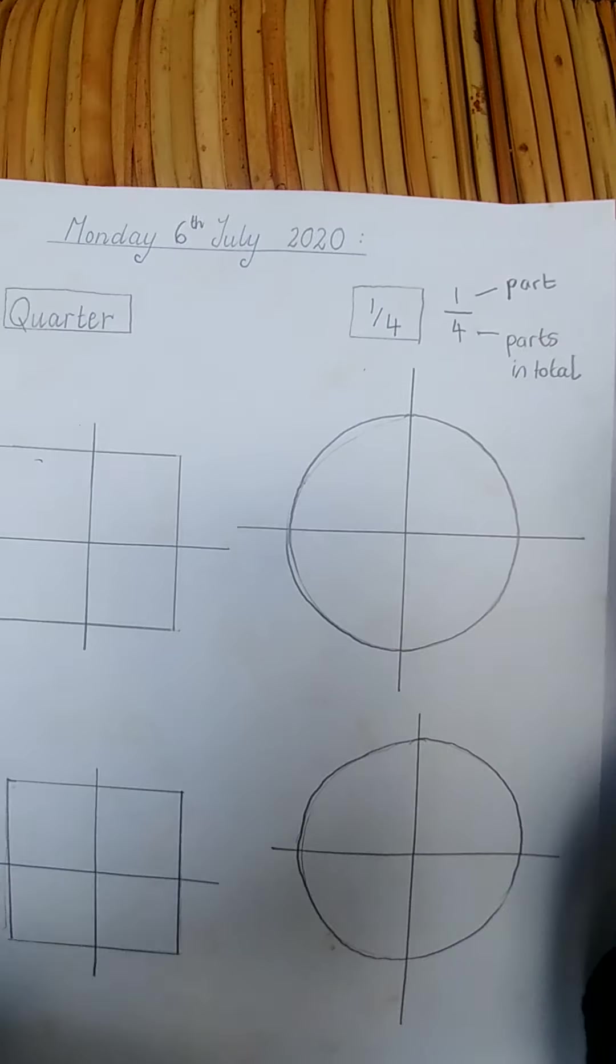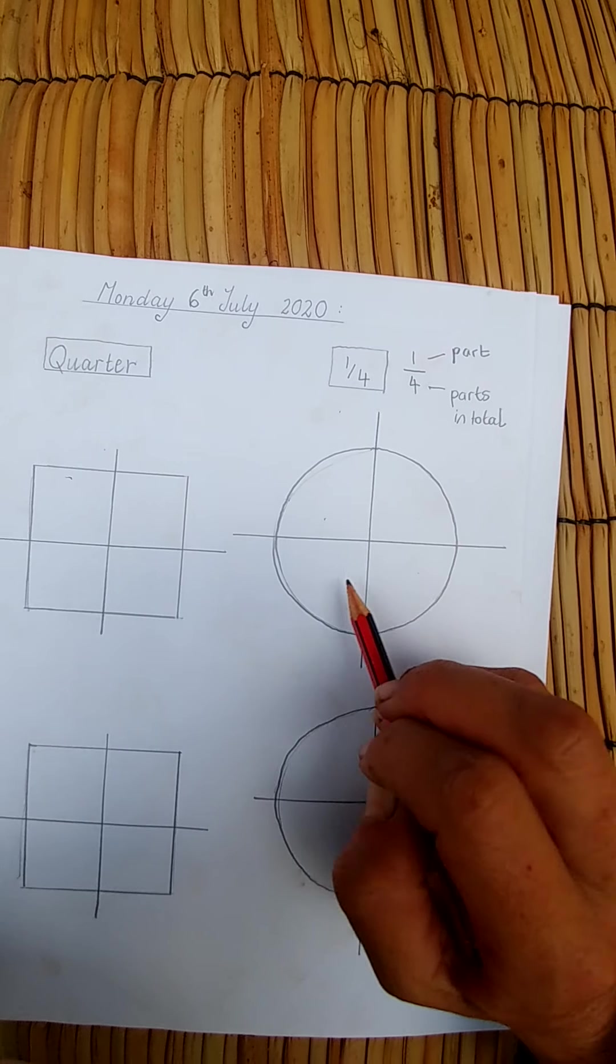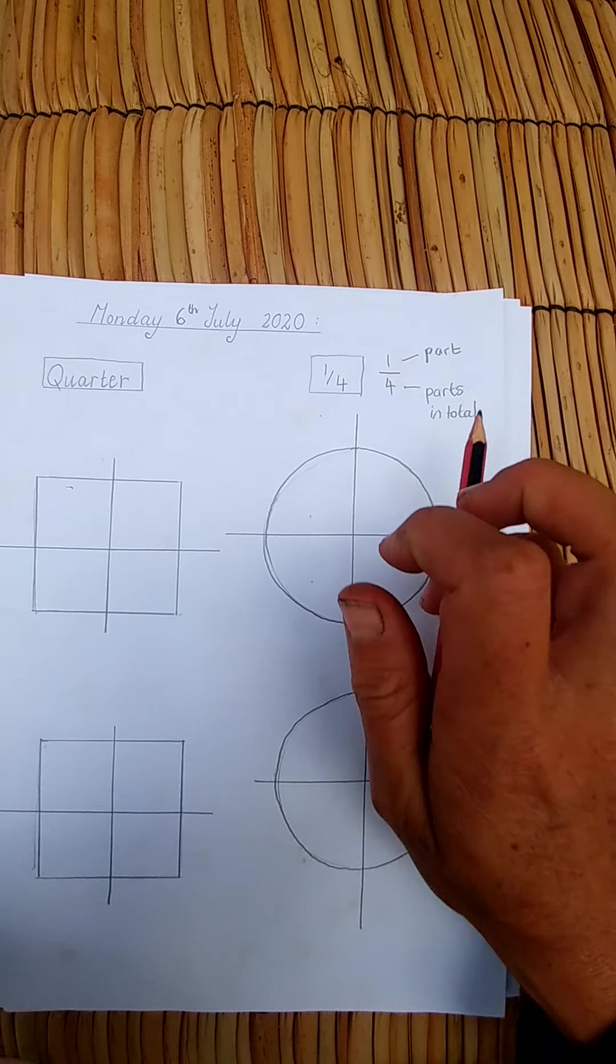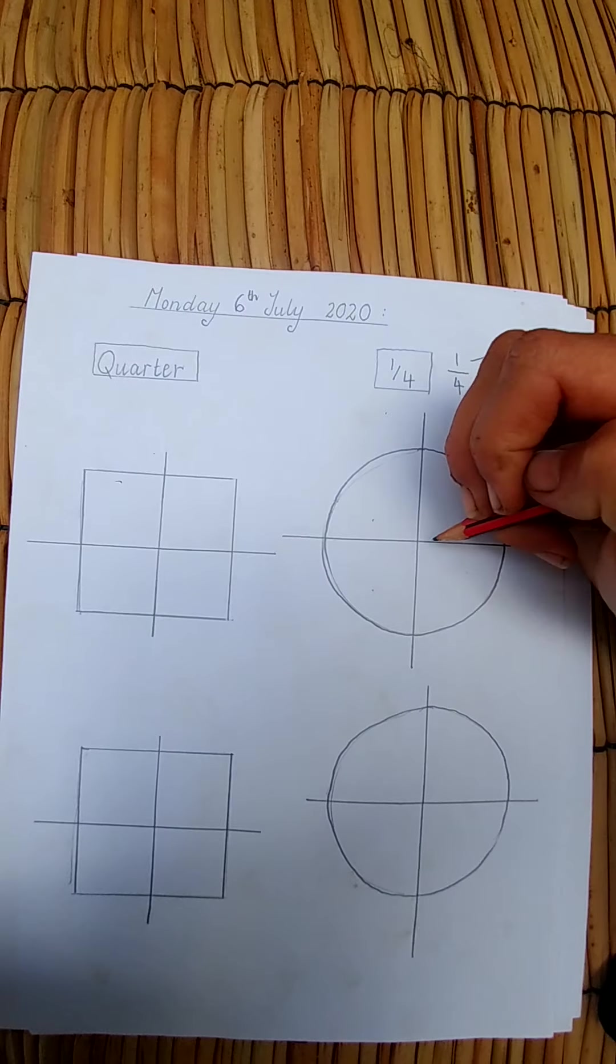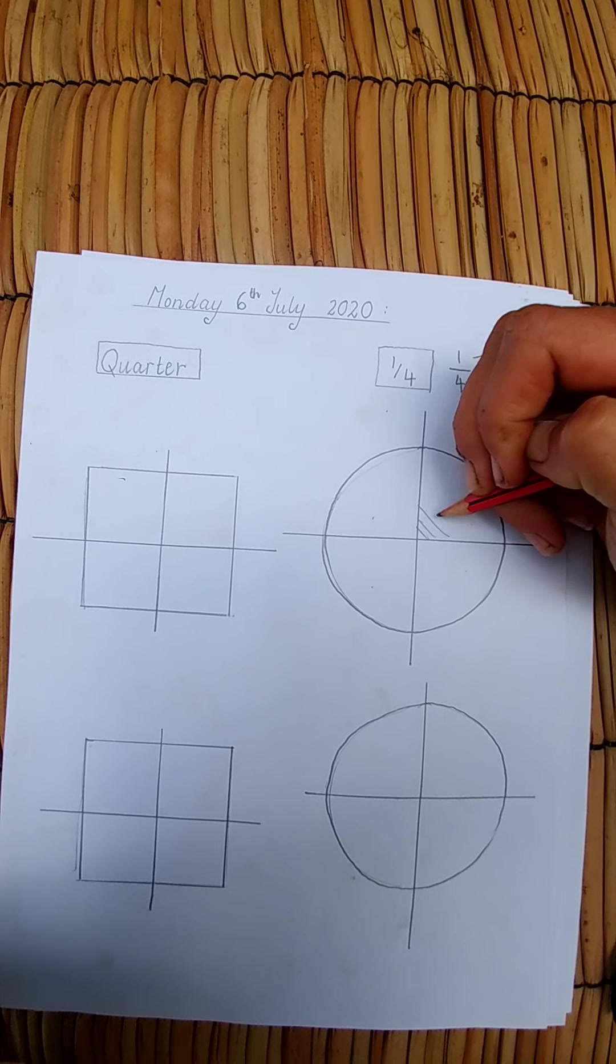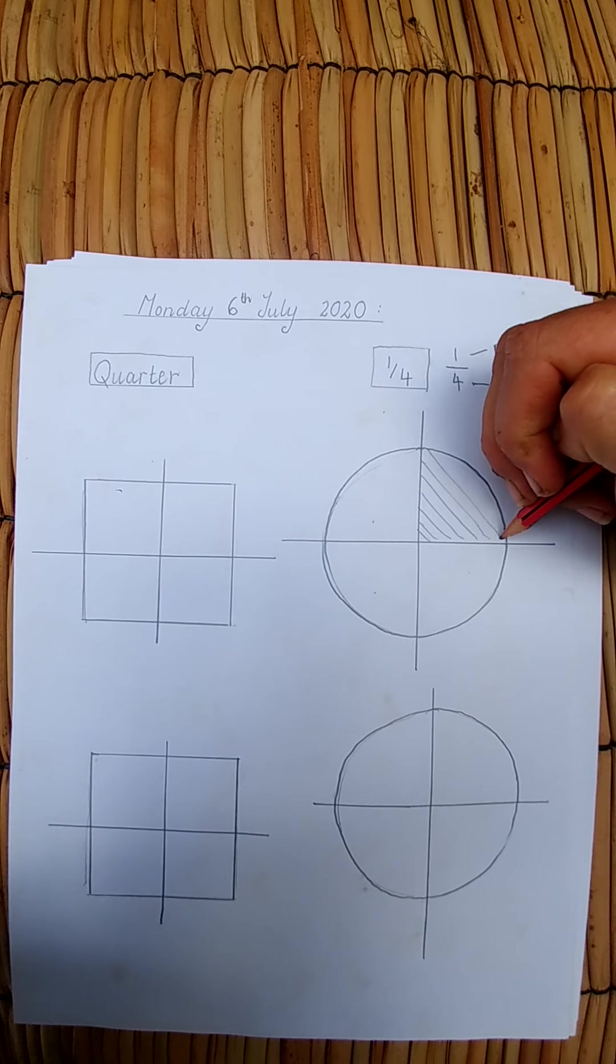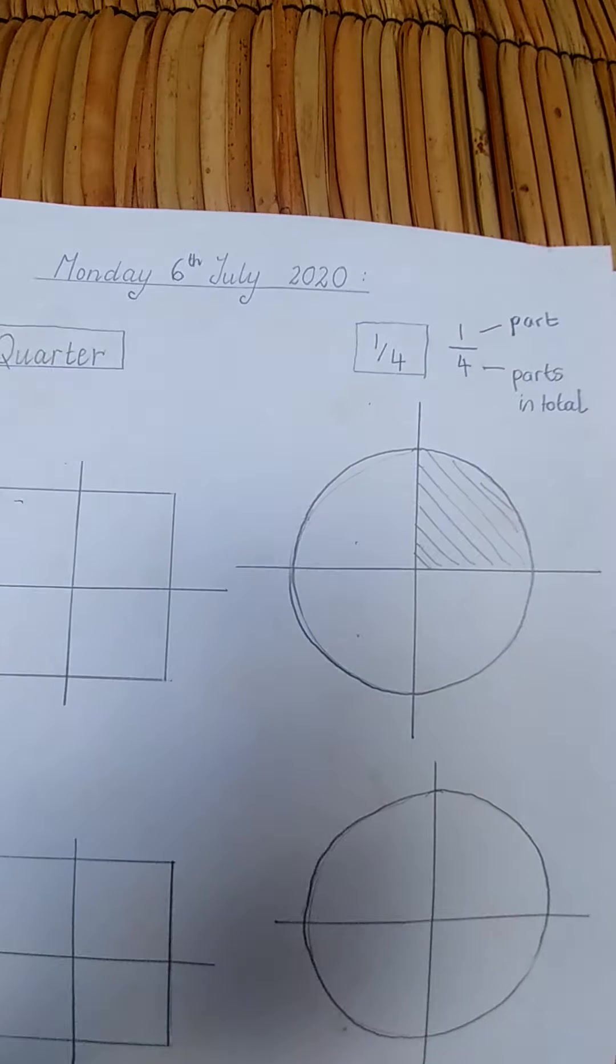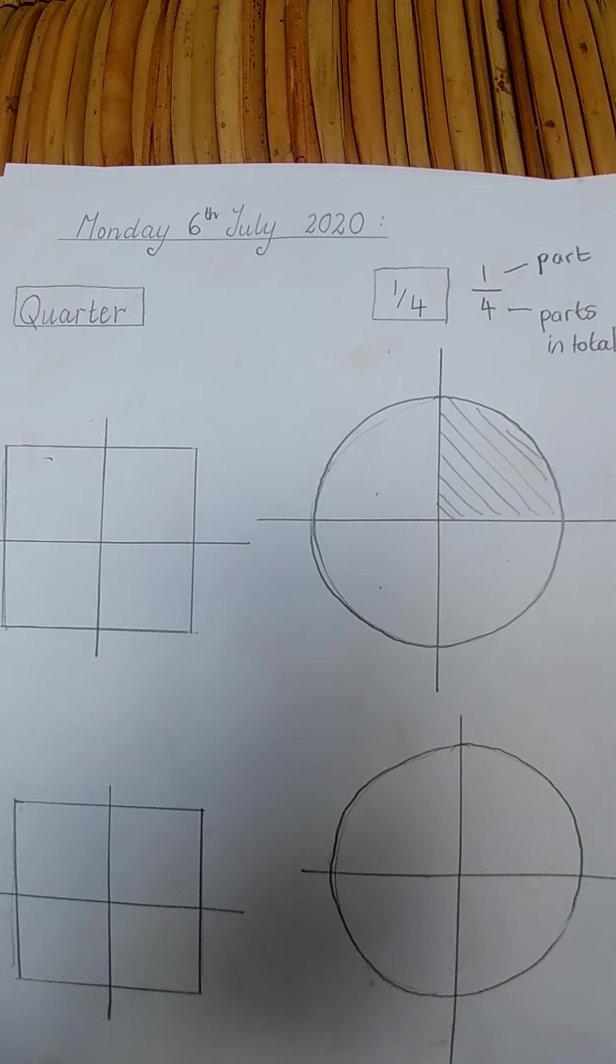We've got four parts in total here and now I want just one of them. I'm going to color it in. I'm going to draw lines here and now we can see that I have shaded one quarter of this circle.